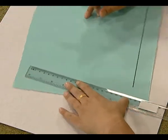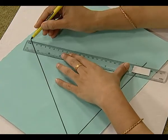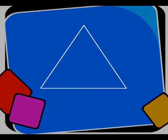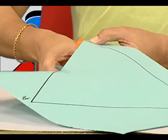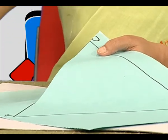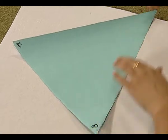On a piece of paper, draw any triangle of suitable dimensions. Here, we are taking a triangle and we will name this triangle as triangle ABC. Cut this triangle — we will get the triangular cutout of triangle ABC. I have this cutout ready with me. This is the triangular cutout of triangle ABC.